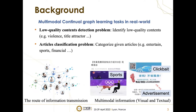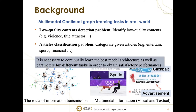Multimodal continual graph data in the real world has the following properties: the data distribution, the multimodal information, and the graph structure pattern change dynamically over time. Also, multimodal continual graph learning tasks in the real world come in diverse forms. For example, in a search engine, engineers need to design algorithms to solve various kinds of problems that improve user experience and business profitability, such as identifying clickbait and sports articles. This means it is necessary to continually learn the best model architecture as well as parameters for different tasks to obtain satisfactory performance.